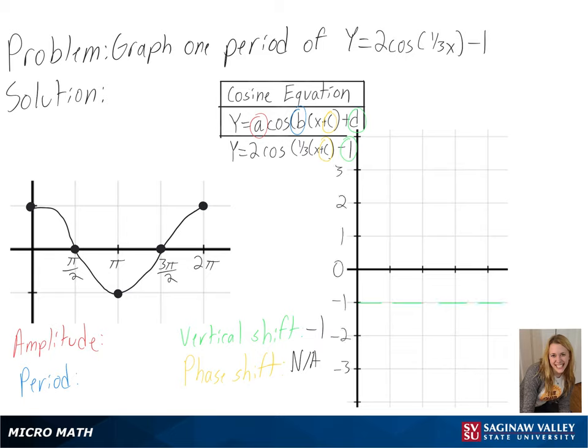Next, we have an amplitude of 2, and we can tell that our graph will have its highest and lowest points two units from the center.